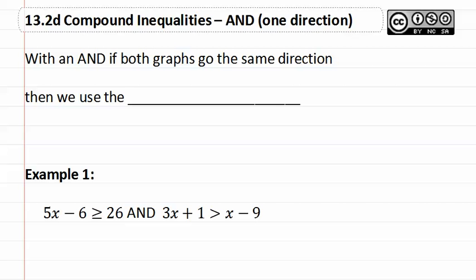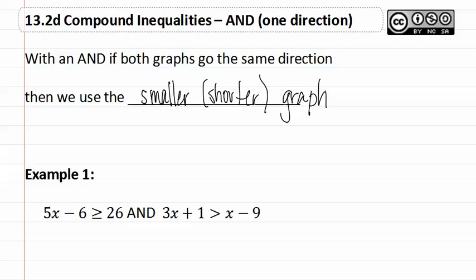13.2D: Compound Inequalities that are AND going in one direction. With an AND, if both graphs go the same direction, we are going to use the smaller or shorter graph. This is because we must select the portion that is overlapping. We will see this in example one.